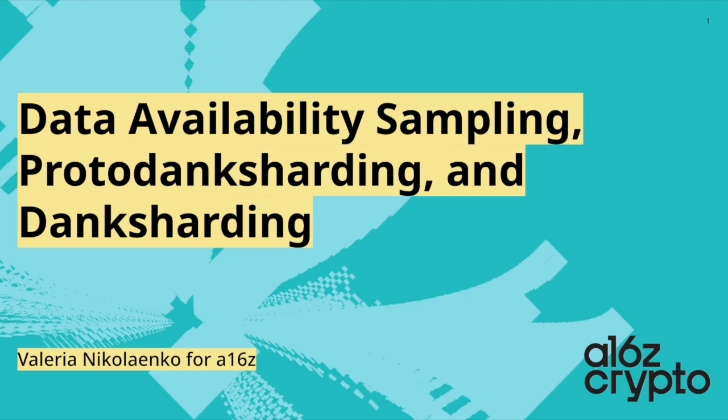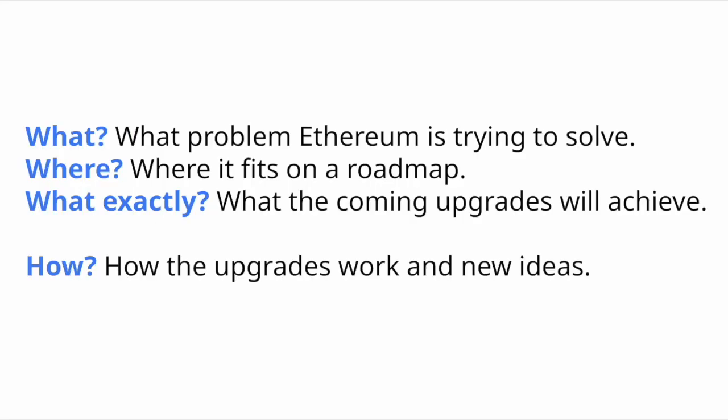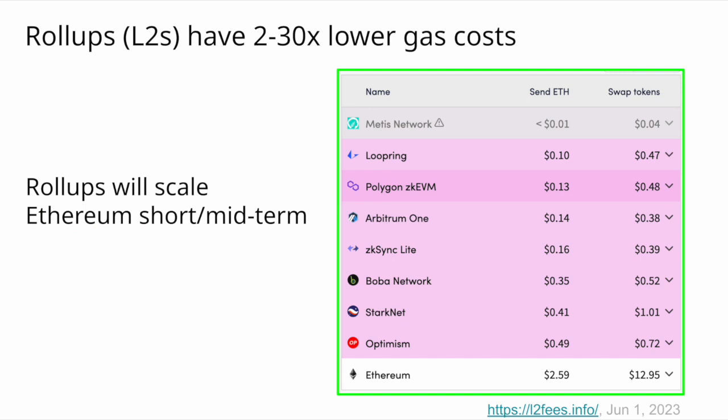Since a number of projects are working on data availability solutions, I hope it's helpful to show how some of the best schemes work so that others could either improve on those, pick up an idea for a research project, or incorporate these ideas into their own projects. I'll start by explaining what problem Ethereum is trying to solve, where it fits on the roadmap, and what will be achieved by this upcoming upgrade. The main goal is to help Ethereum scale.